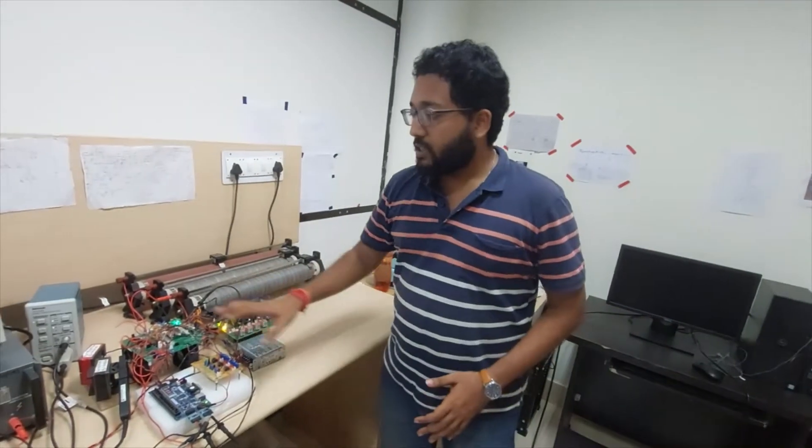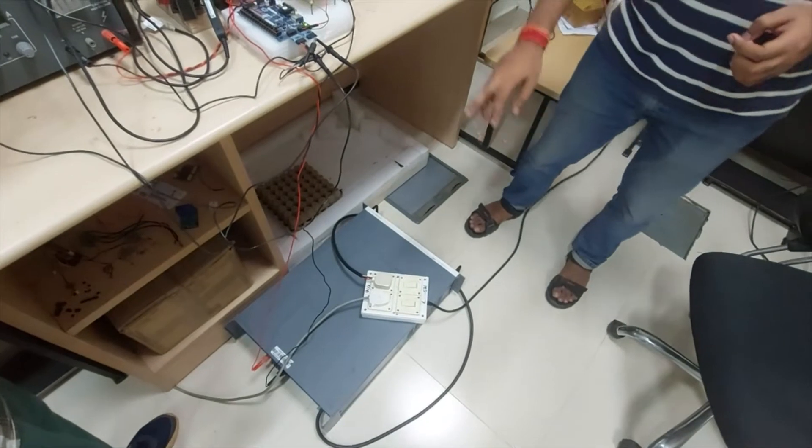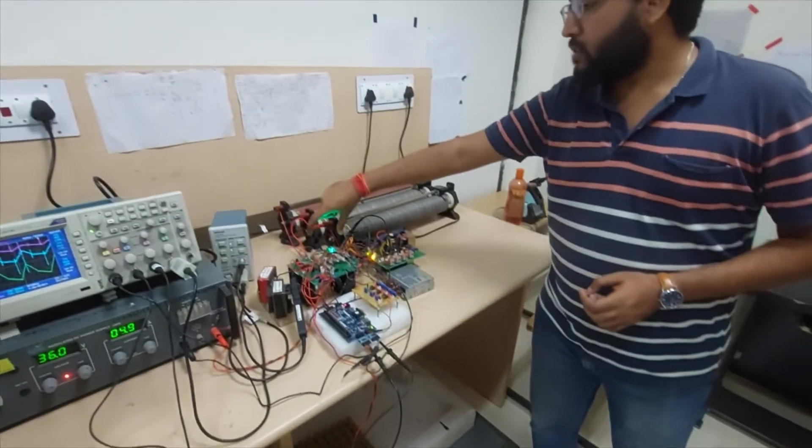The converter is running. This is the input voltage source V1. This is another input voltage source V2 for the two inputs. And here is the output voltage that is coming.